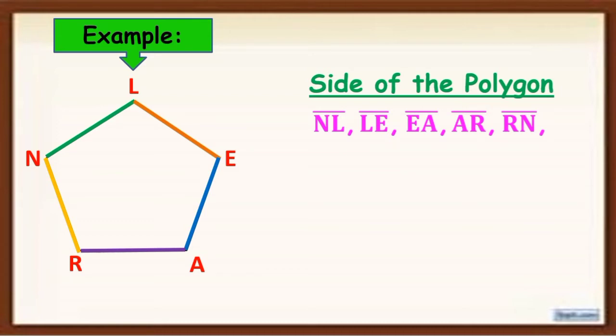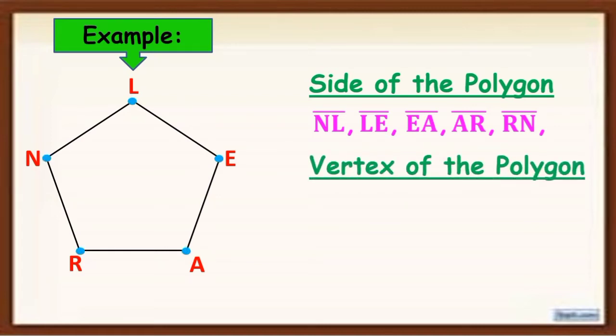Next, this one is what we call the vertex of a polygon. So if I'm going to name this vertex, the name of this vertex is L or point L, E, A, R, and N. So those are the names of that vertex.